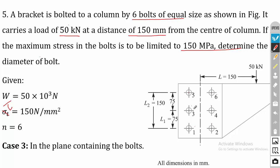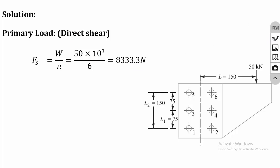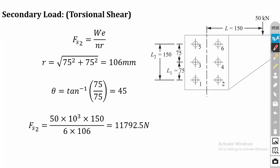For Case 3, the primary load is direct shear: fs1 = W/n. Here W = 50 kN and n = 6 (total number of bolts). Solving gives fs1 = 8333.3 N. This is calculated without considering the eccentricity value.